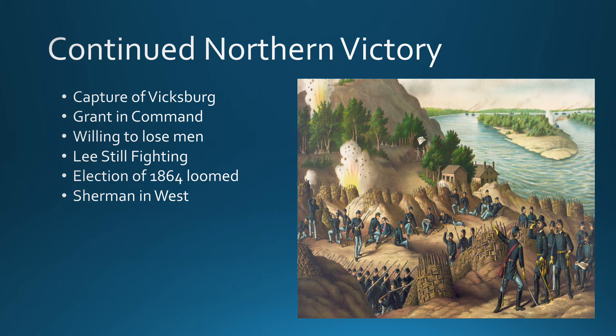Another key military leader is William Tecumseh Sherman, who becomes the major figure in the western theater of the war, working out in the West. This leaves Grant handling the northern Virginia area and dealing with Lee.